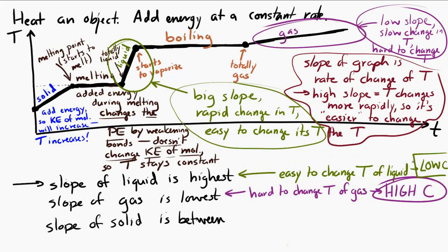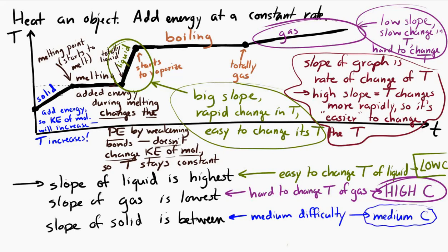Recognize that not every substance is going to take a longer time to boil than to melt, and not every substance is going to have a very low slope for gas and a very high slope for liquid with solid in the middle. It will always be a little different, but you can always relate the characteristics of the temperature versus time graph to specific latent heat and specific heat capacity.